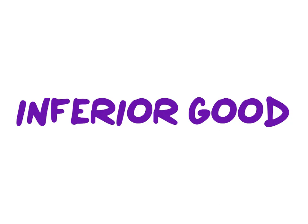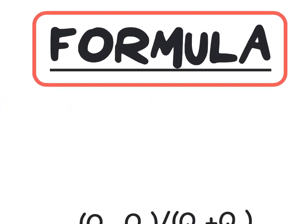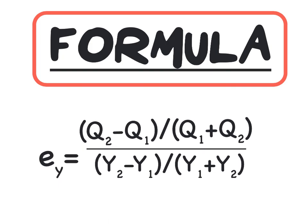For additional examples and explanations on the difference between inferior and normal goods, please be sure to watch my previous explainer video. In order to calculate our income elasticity coefficient we will use the arc formula. EY, our elasticity coefficient, is equal to the change in quantity divided by the change in income — that is quantity 2 minus quantity 1 divided by quantity 1 plus quantity 2, all divided by income 2 minus income 1 divided by income 1 plus income 2.